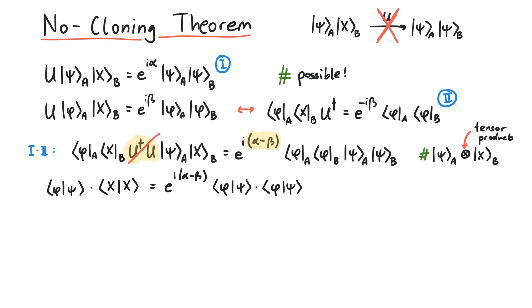The next step is to take the absolute value on both sides. This means that the phase factor vanishes, since its absolute value is 1. Finally, we use that the absolute value of some complex number squared is the same as the absolute square of that number, and we arrive at an equation that looks like x equals x squared.